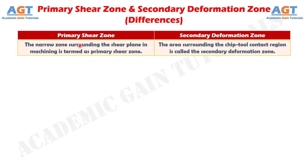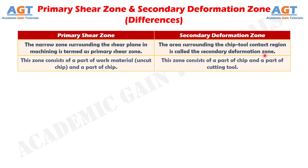Difference Number 1: The narrow zone surrounding the shear plane in machining is termed as primary shear zone, whereas the area surrounding the chip-tool contact region is called the secondary deformation zone.